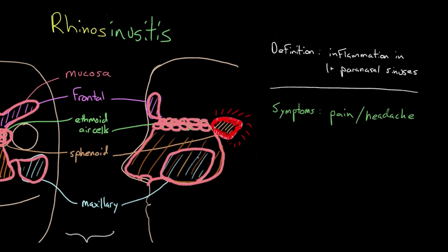With the deep sinuses, that may just cause headache. With maxillary sinusitis, you can actually feel pain in that particular sinus — in fact, if you tapped on it with your finger, that could produce tenderness. Another thing that happens with inflammation of the mucosa is that it produces mucus. Going back to our sphenoid sinusitis, we'll draw in a fluid layer of mucus being produced, and that mucus has to go somewhere.